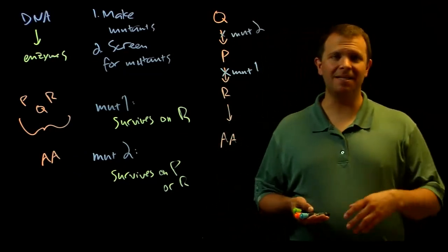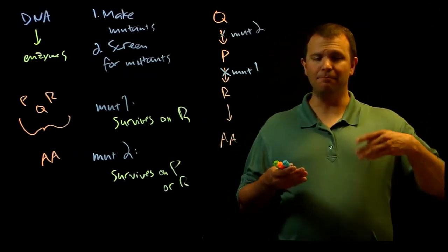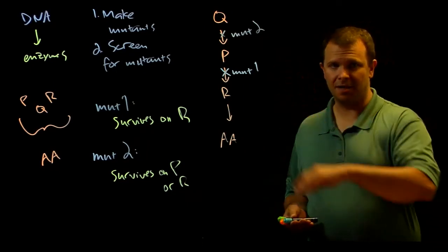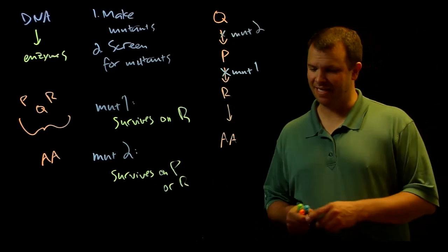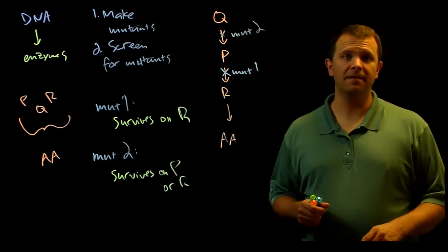We can begin to tease this apart by making multiple mutants, more than just the couple that I've shown here, and performing what's called a complementation test. That's what we're going to talk about in the next video.